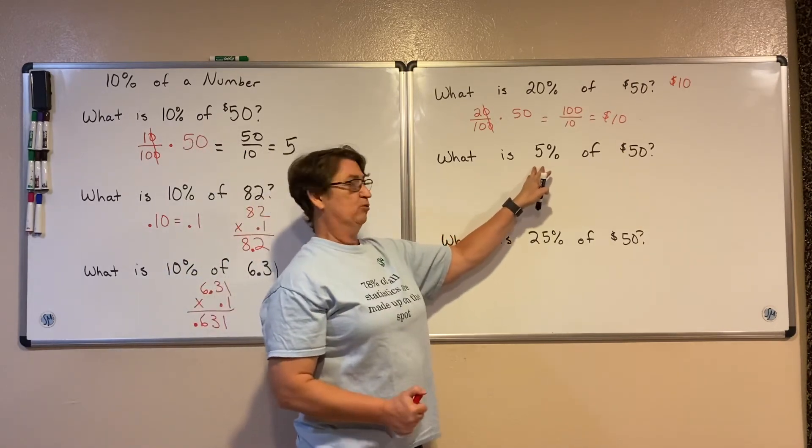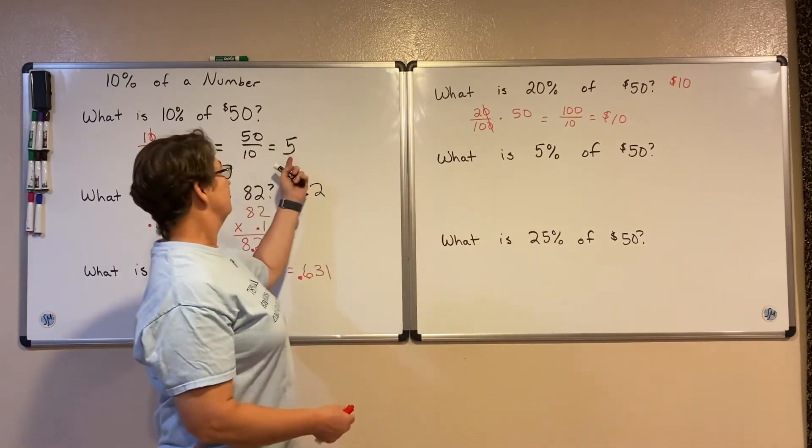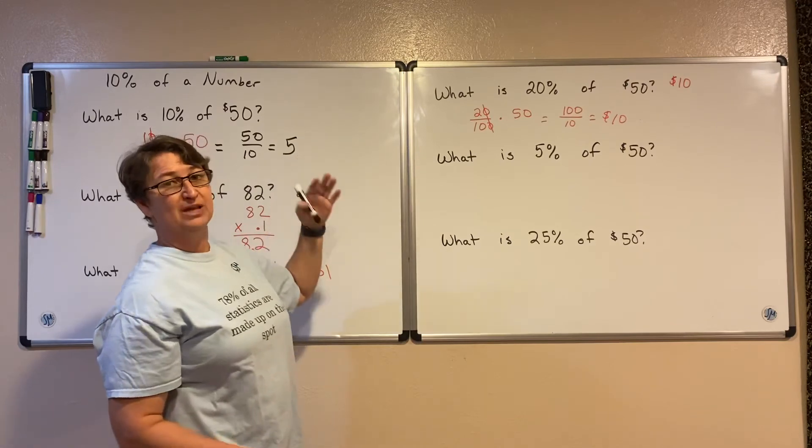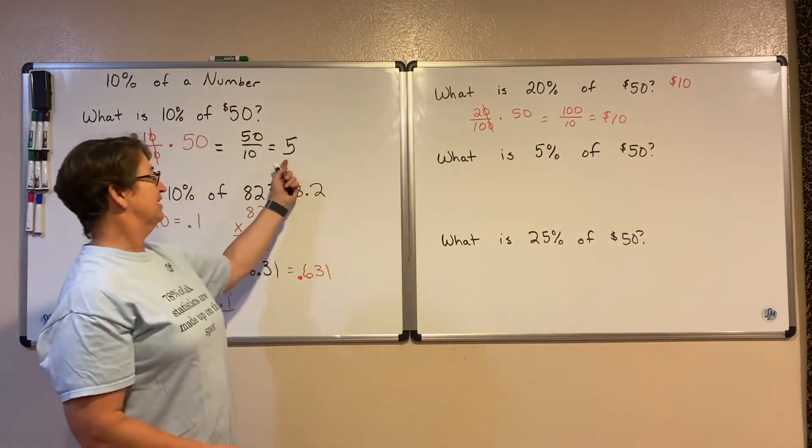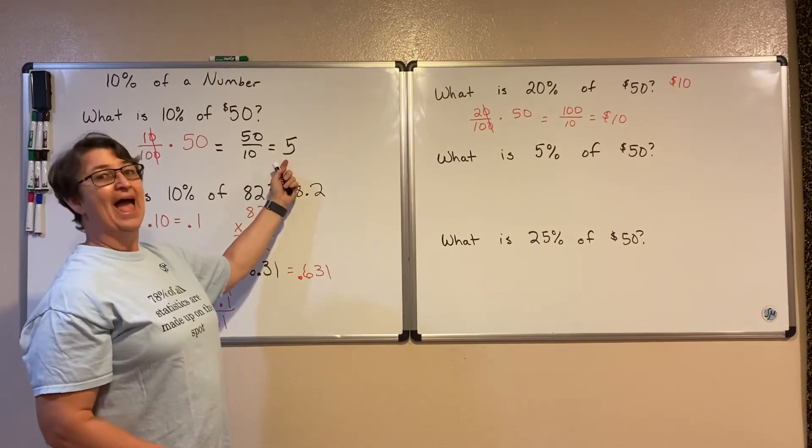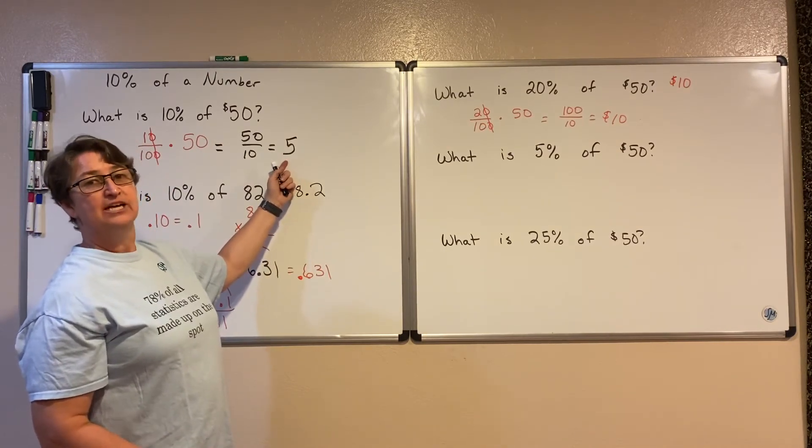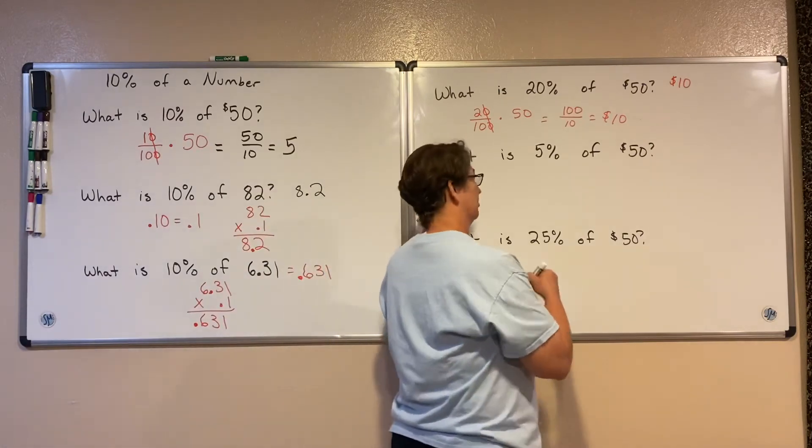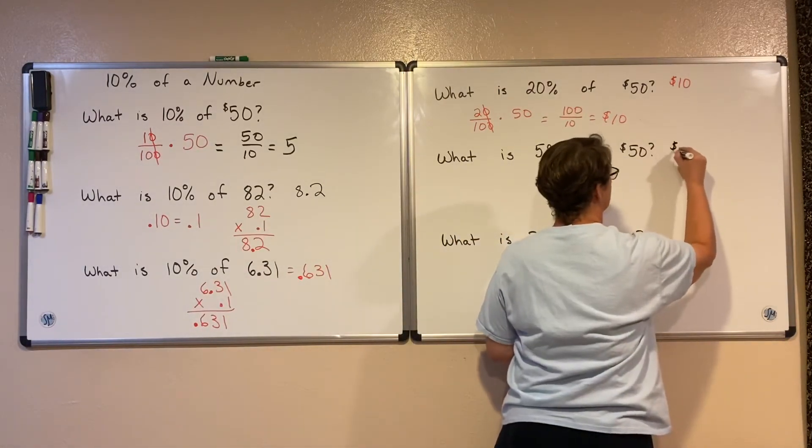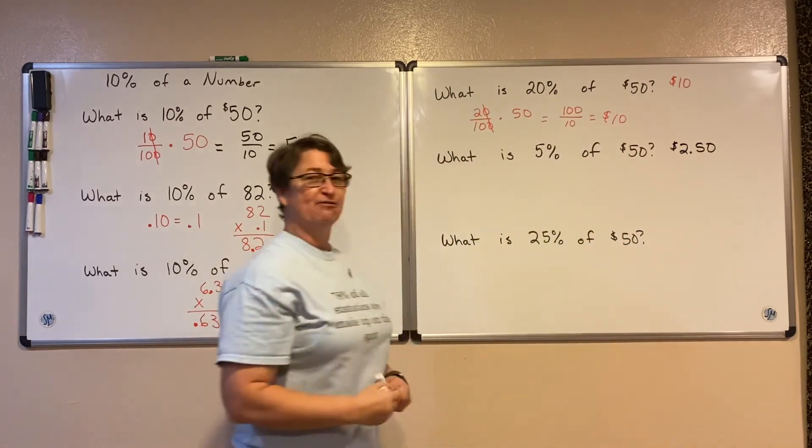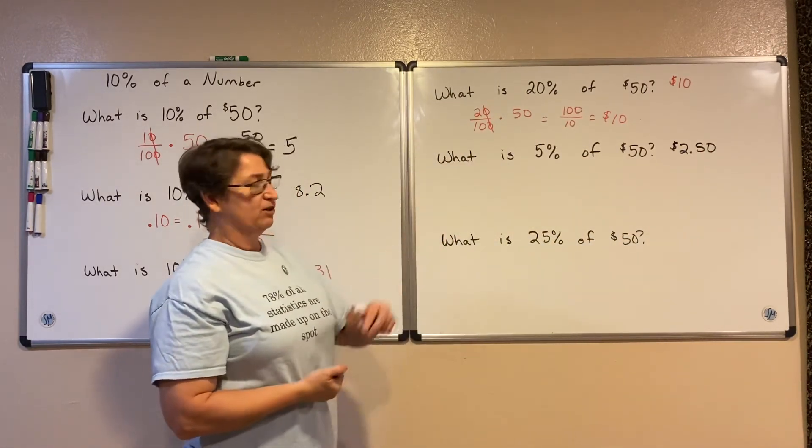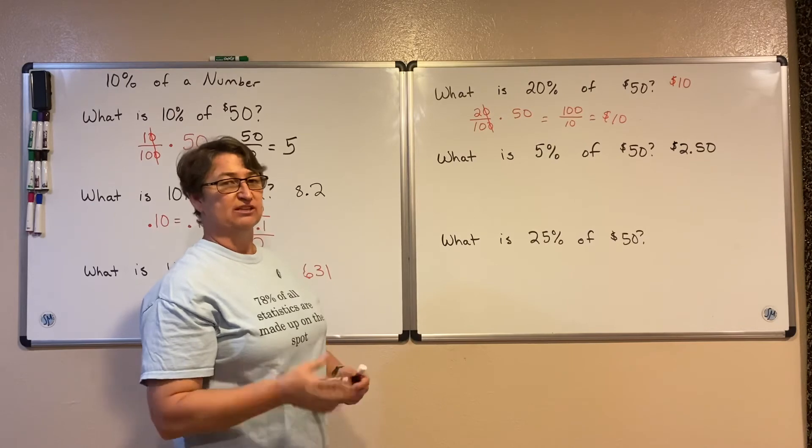What about 5%? Well, what you do is you take your 10% and you split it in half. So in this case, I know that 10% is $5. Half of that is $2.50. Half of $5 is $2.50. So I can just take that 5% is $2.50. It's the 10% split in half.